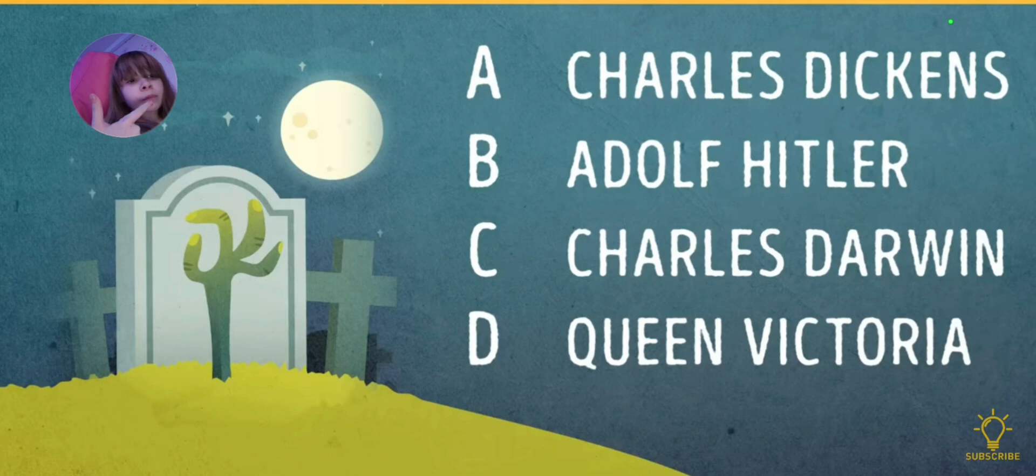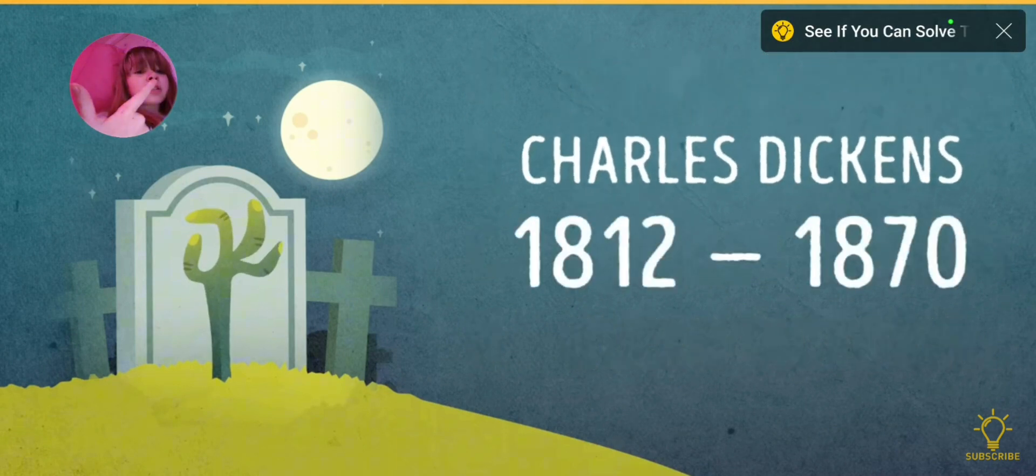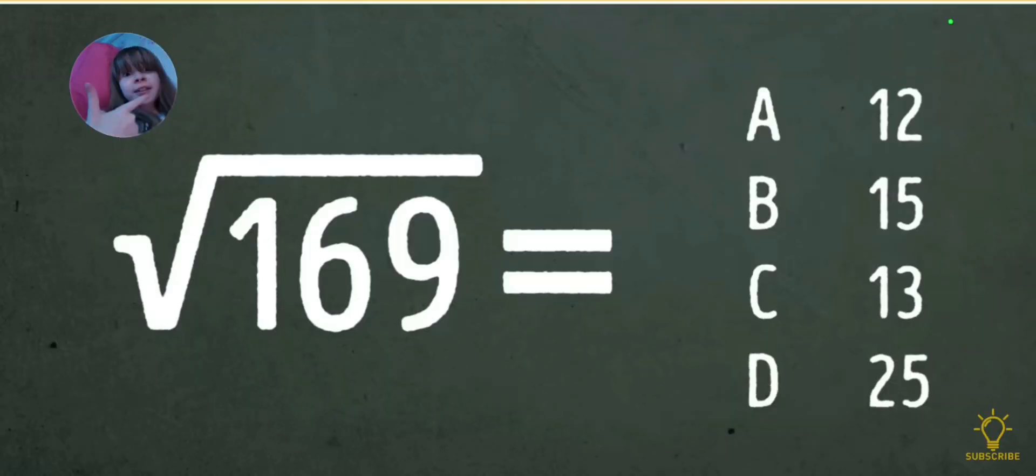Now, how about some history? Number 3. Who dies first? A. Charles Dickens. B. Adolf Hitler. C. Charles Darwin. D. Queen Victoria. Oh, is it Charles Dickens? Oh. There we go. Stone 10 by Stone 10.